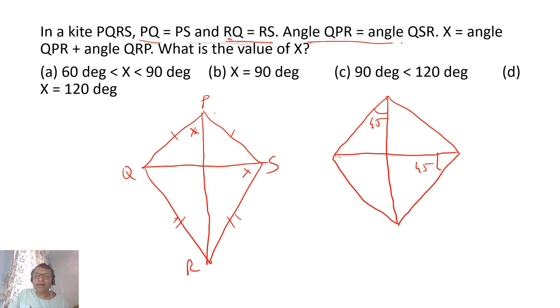Now we want angle QPR, which we know is 45, plus QRP, which will also be 45. This angle also will be 45, so 45 plus 45 is 90. Now check out which option has 90 - look at B option. So that has to be the answer.